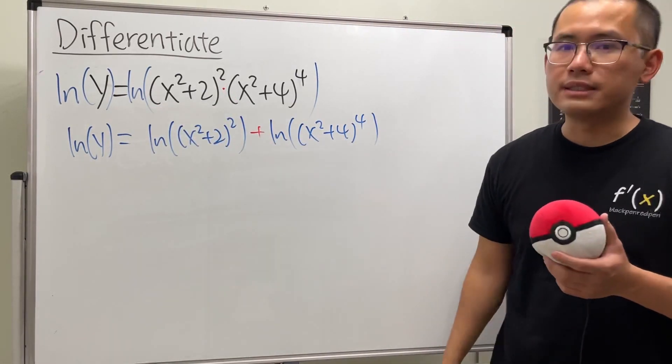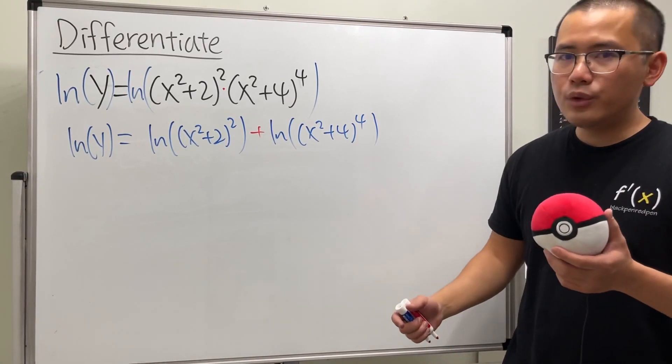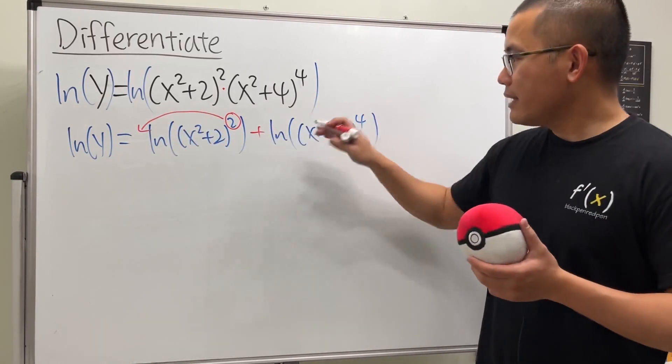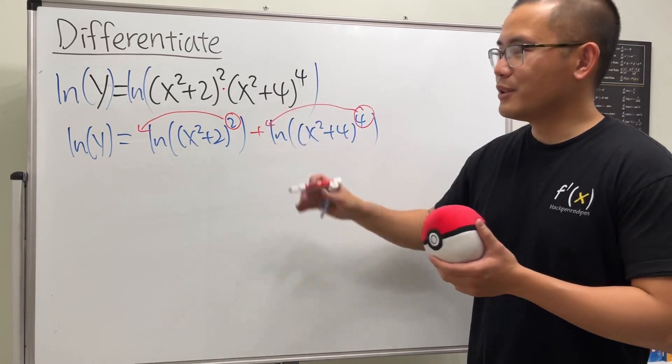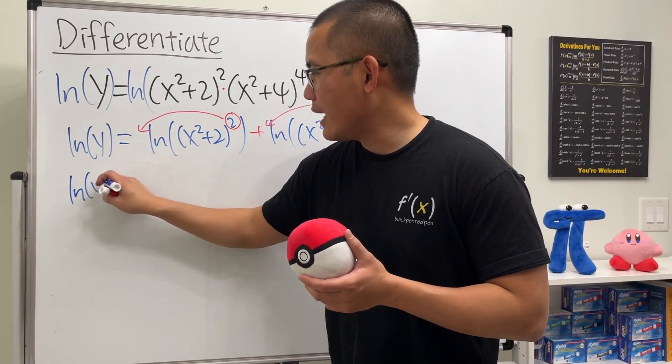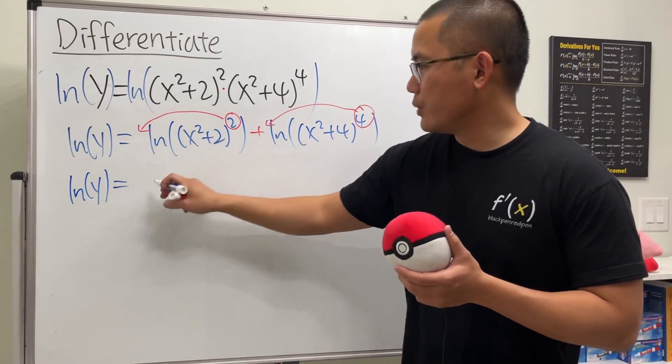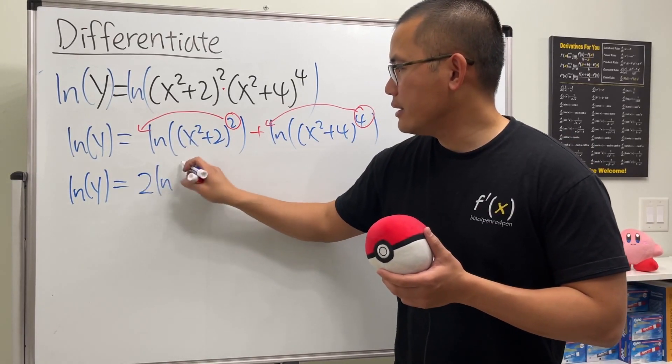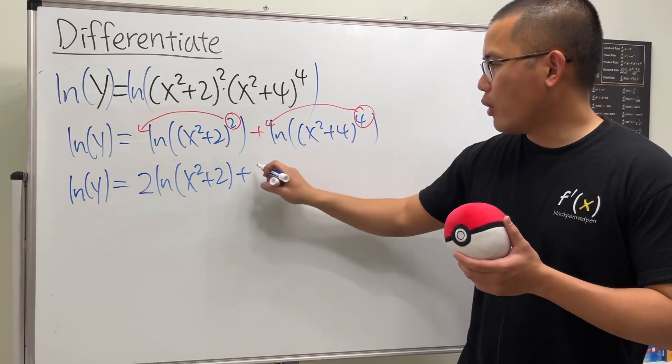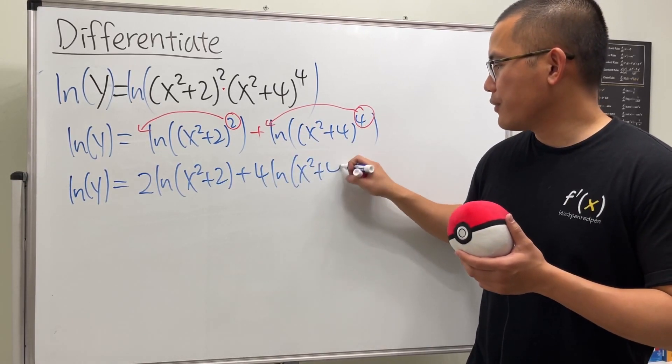And before we continue we can actually do more - we can actually bring the power to the front. So here we see we have ln of y and that's equal to 2 times ln(x² + 2) and then we add 4 ln of (x² + 4).